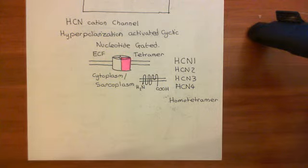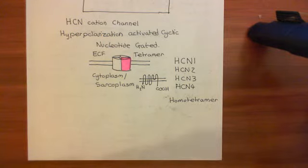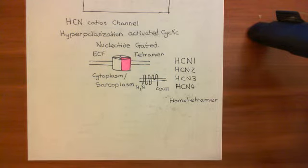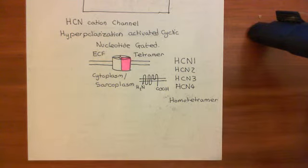Welcome to this next video in which we are discussing adrenoreceptors. We're in the process of discussing how it is that the sinoatrial node actually generates spontaneous action potentials, and then how it is that beta-1 adrenoreceptors trigger an increase in the rate at which the sinoatrial node generates spontaneous action potentials.